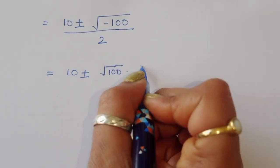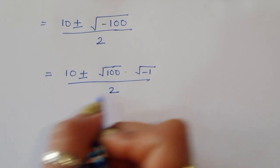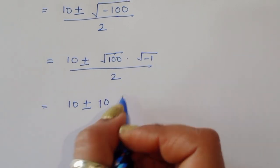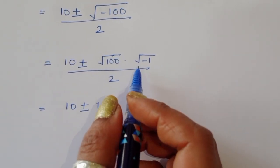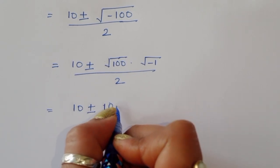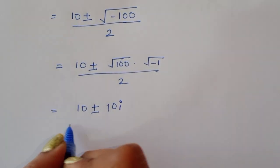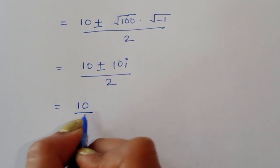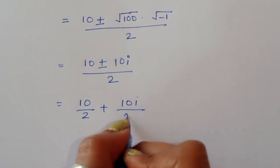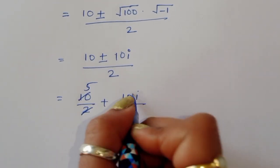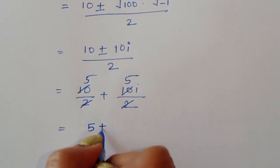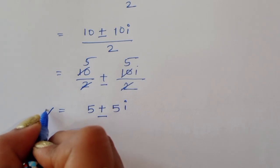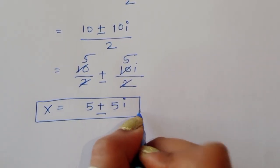We can write square root of minus 100 as square root of 100 times minus 1. The square root of 100 is 10, and square root of minus 1 is i. So we get 10 plus or minus 10i divided by 2, which simplifies to 5 plus or minus 5i. This is the value of x.